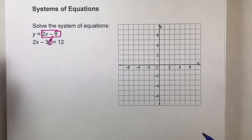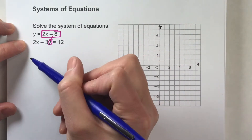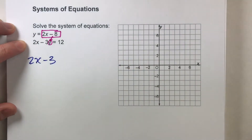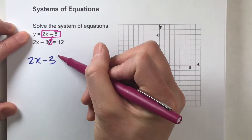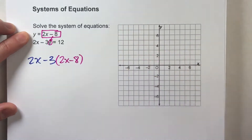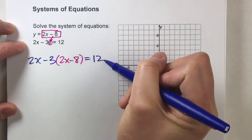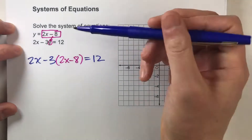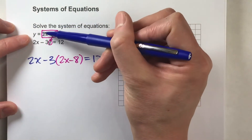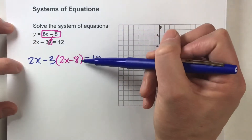So instead of writing 2x minus 3y, I'm going to write 2x minus 3, and instead of y, all that stuff y equals — and that equals 12. All I did was rewrite that second equation, replacing y with what y equals.